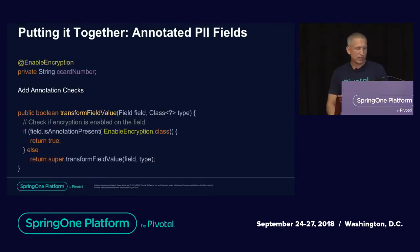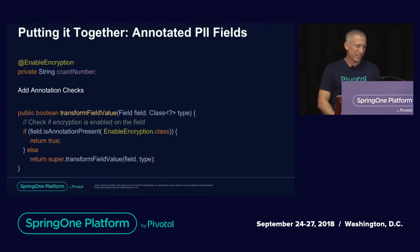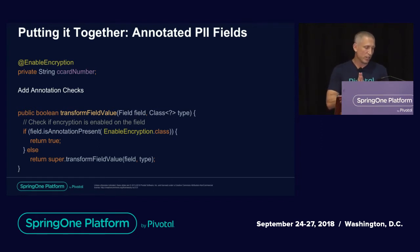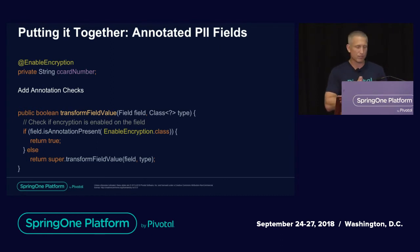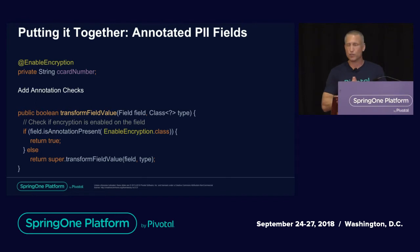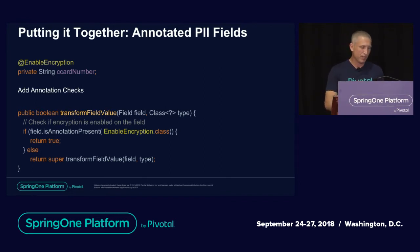A quick preview of the code: in the transformFieldValue implementation, all we do is check whether a given field has the PII encryption annotation present. If it's there, we do special handling; otherwise, we use the default behavior.